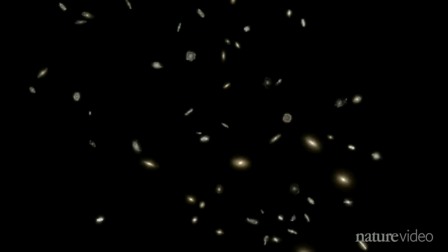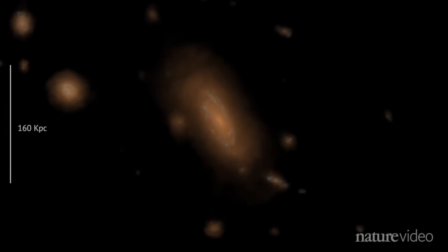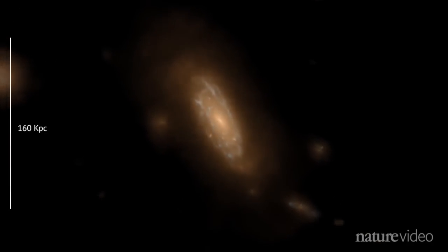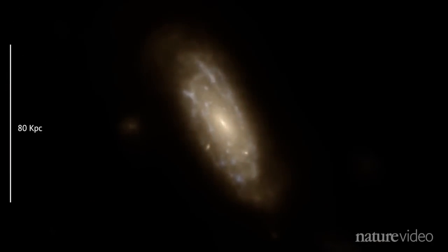A big challenge, the team say, was recreating the variety of galaxies we observe. The model's 40,000 galaxies include this spiral one, like our Milky Way.